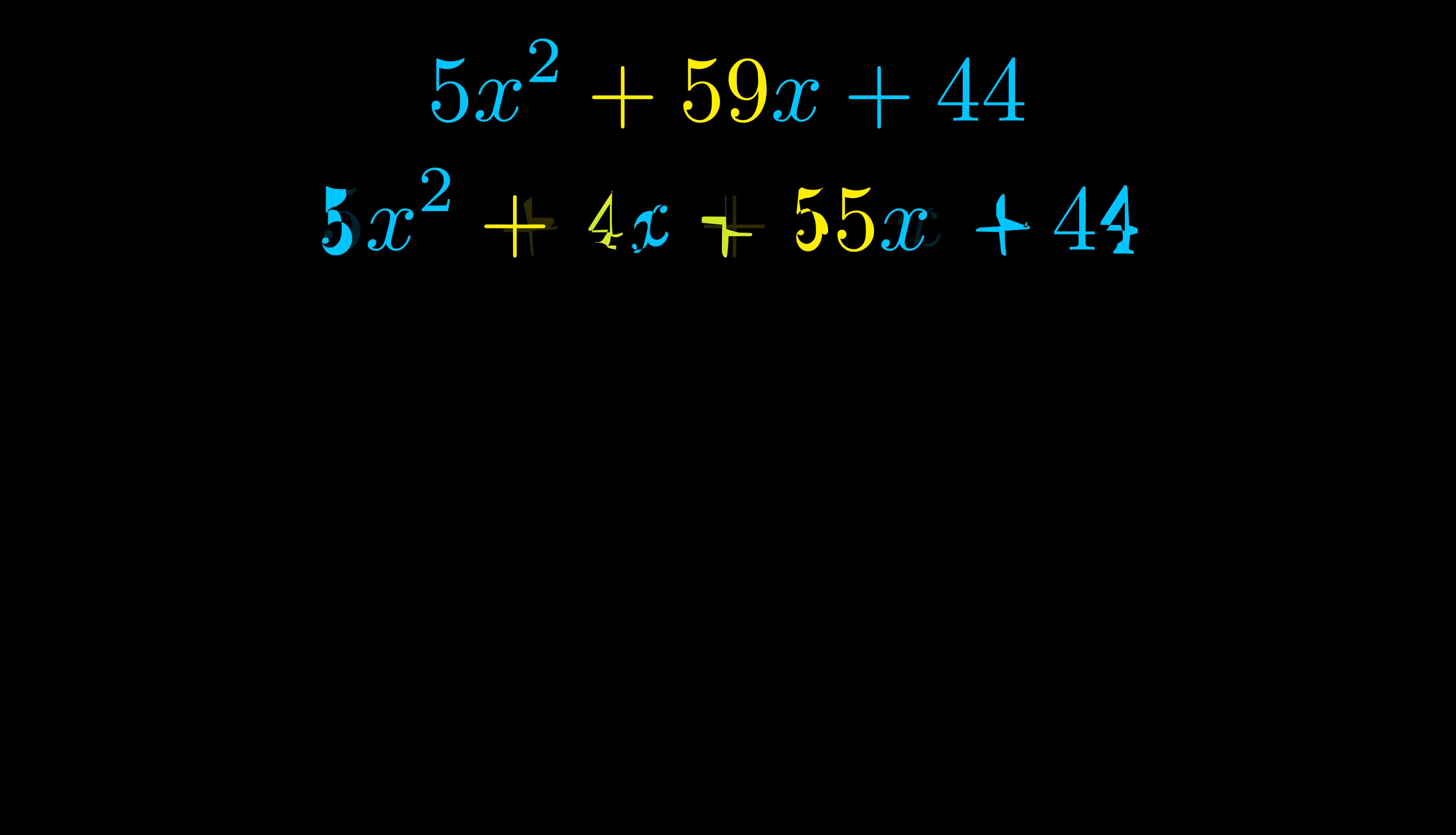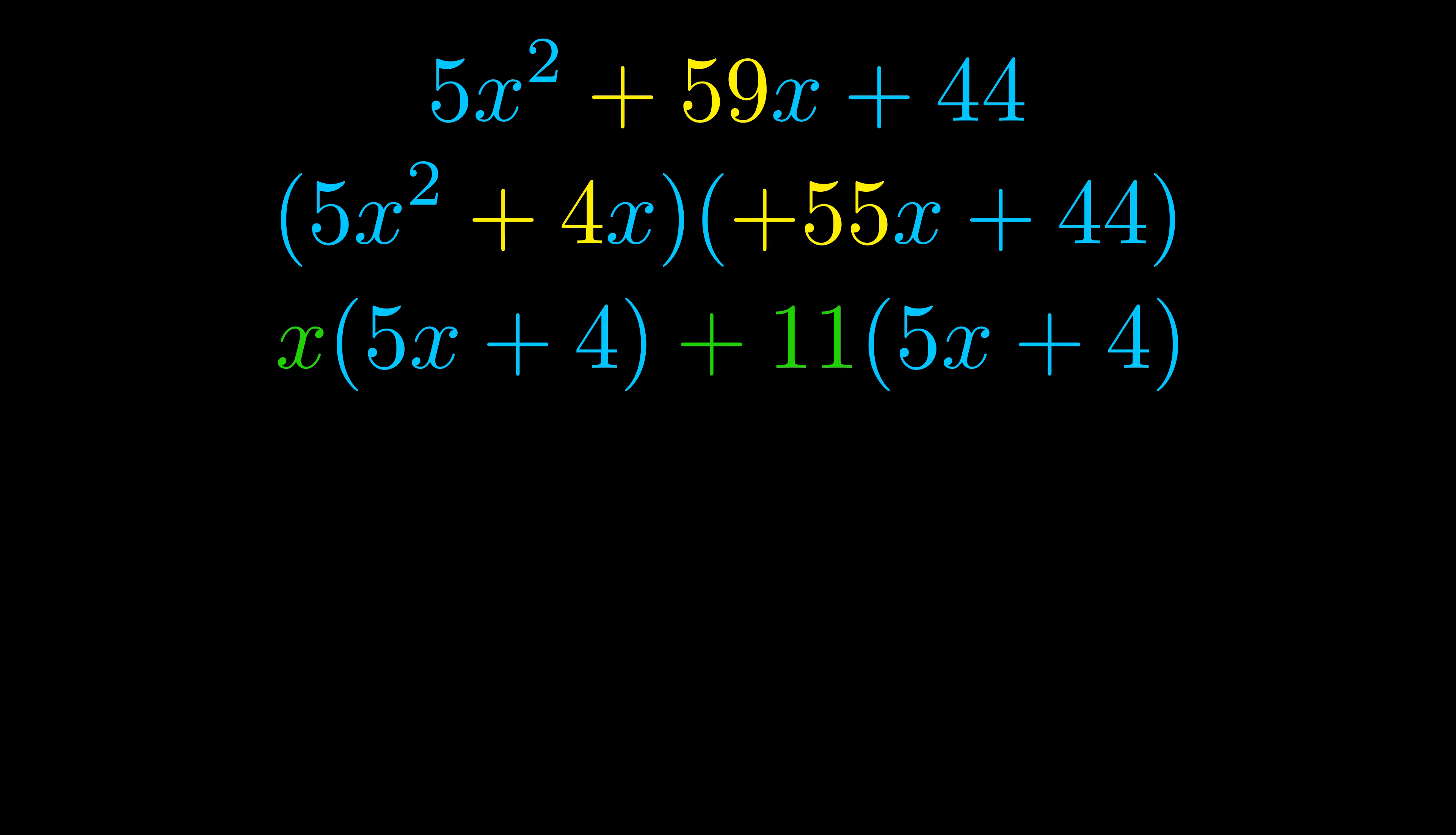Once we've done this we go ahead and we put parentheses around the first term and the last term and we do that so that we can take the greatest common factor out of both terms. We can see the greatest common factor is now outside in green.